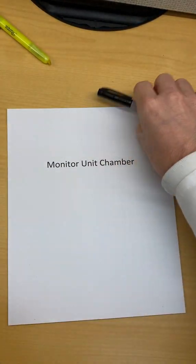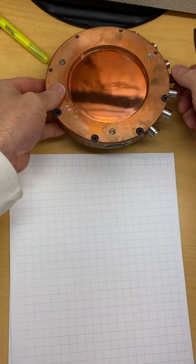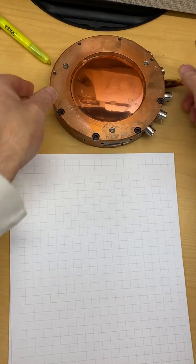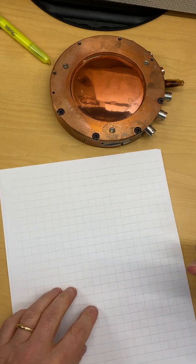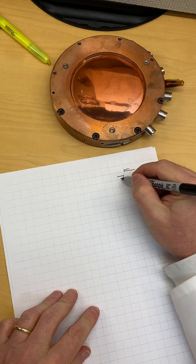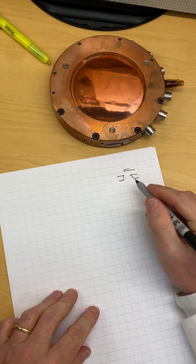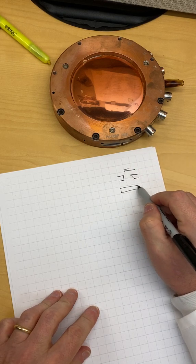An interesting thing about the monitor chamber is that they are ionization chambers. I think these run at about 500 volts. They sit up high in the linac, so you have your target, your primary collimator, and then below that you'll have your monitor chamber.